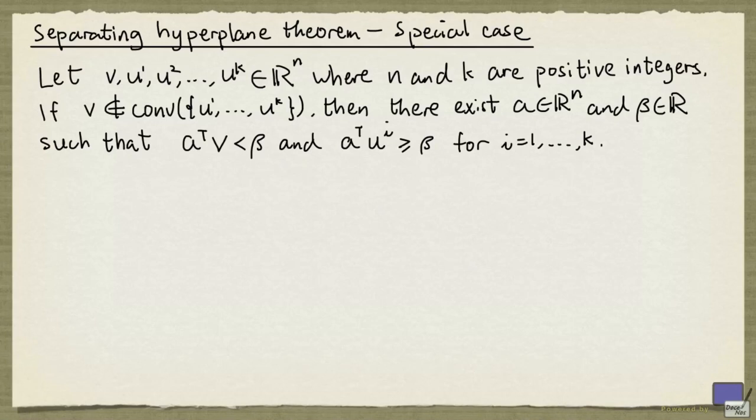We are going to look at a special case of the separating hyperplane theorem. The version that we will prove is the following. Let v, u1, u2, up to uk be elements of R^n, where n and k are positive integers.